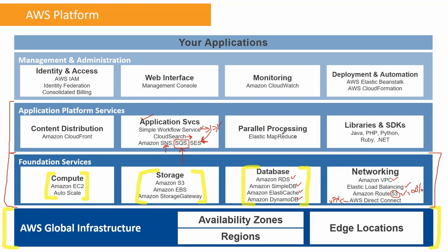Elastic MapReduce is Amazon's big data service, but very few clients are using MapReduce today. There are Spark-based solutions available, and people tend to run Spark directly on EC2 instances rather than using Elastic MapReduce.